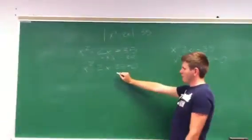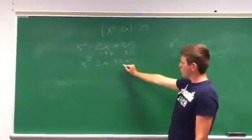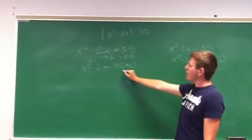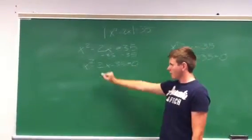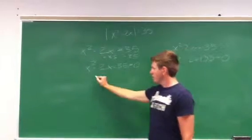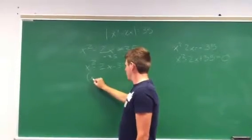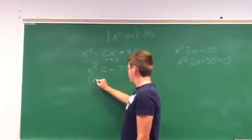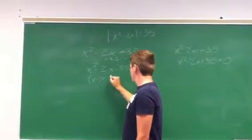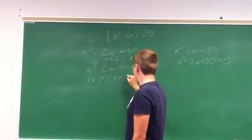This side here you can factor down. You're going to want to get two numbers that when multiplied together give you negative 35, and those same numbers added together give you negative 2. These numbers are going to come to negative 7 and positive 5.